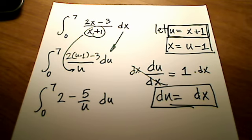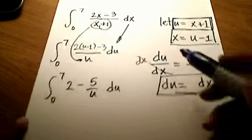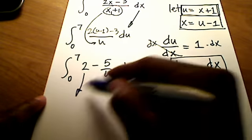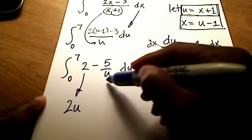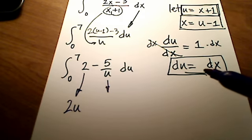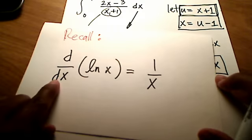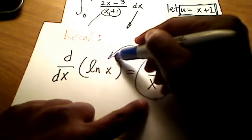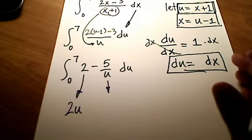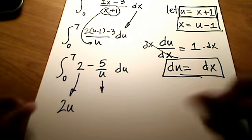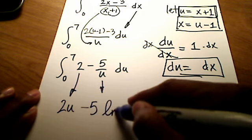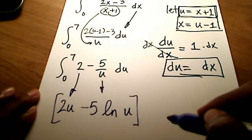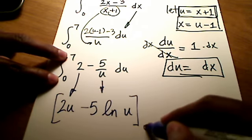Now, why would I do that? The antiderivative of 2 with respect to u is simply 2u. And recall that the derivative of the natural log is 1 over x, so the antiderivative of negative 5 over u goes back to negative 5 natural log of u. All of this is evaluated between the upper and lower limits of 0 to 7.